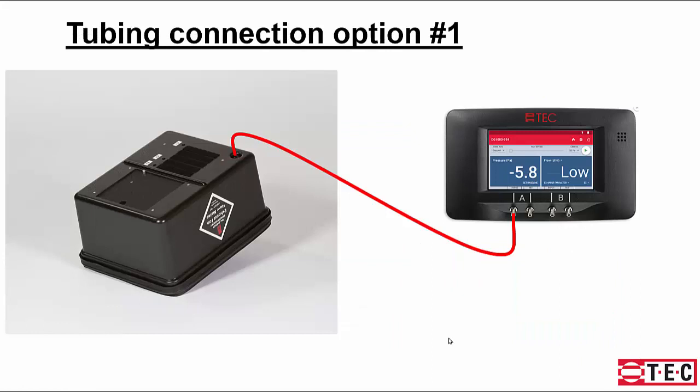There are three connection options. The first one is simply measuring a pressure and using the chart on the side of the box to convert that pressure to flow. You're just connecting it to the input on channel A, putting the fan over the exhaust fan, turning the exhaust fan on, and getting a pressure reading.